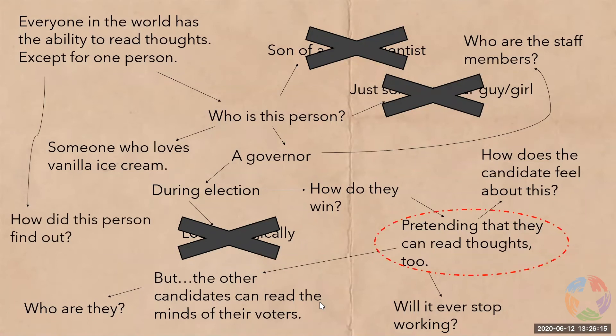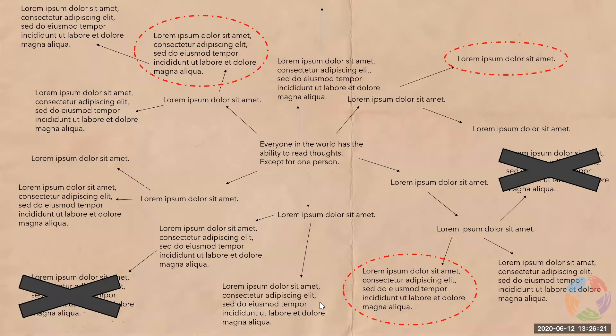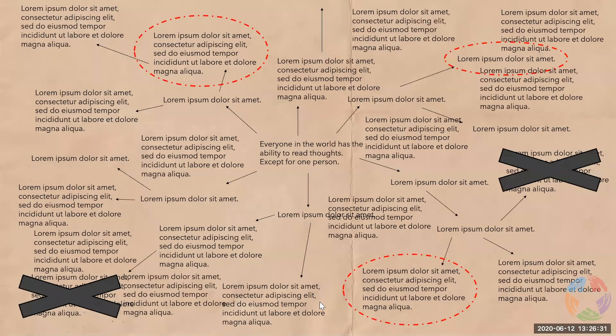Eventually you will fill up the entire page — it may look something like this, with some entries scratched out and some circled. Know that all the notes on your mind map are for yourself. Use any color or any method — as long as it helps you organize your thoughts.